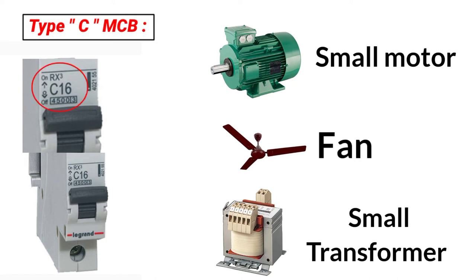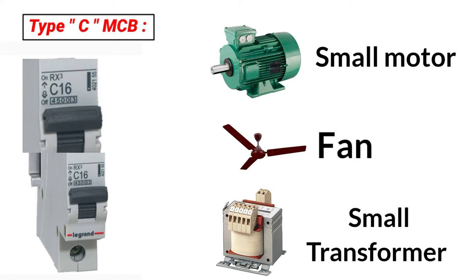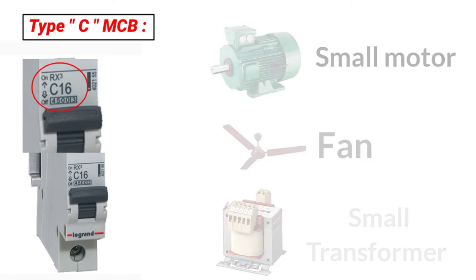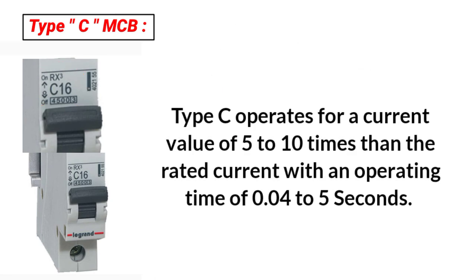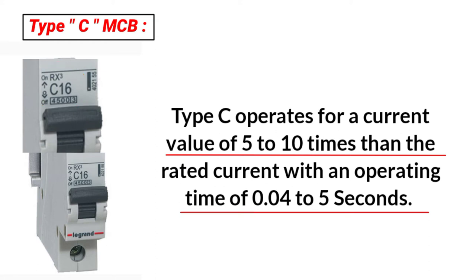When starting a machine, the current will be more than 8 times the rated current due to the inductive loads and the starting current surge. That is why Type C MCP is mainly used for commercial and industrial applications where sudden current rises occur. The normal tripping current is 5 to 10 times rated current, and the MCP will trip in 0.04 to 5 seconds.